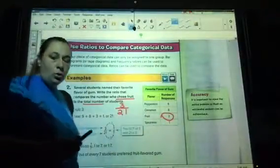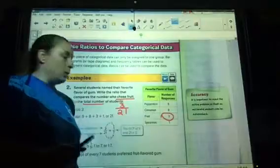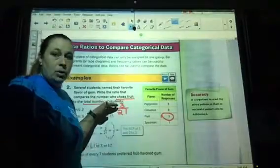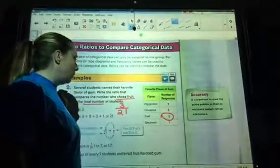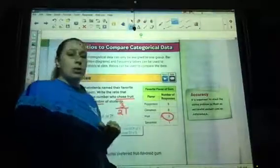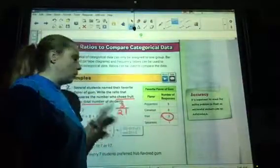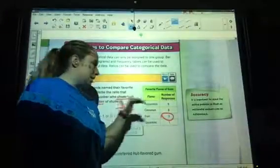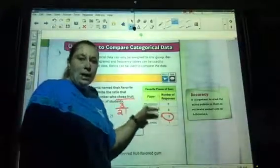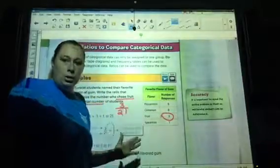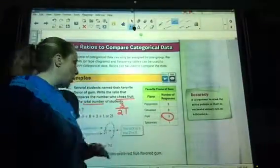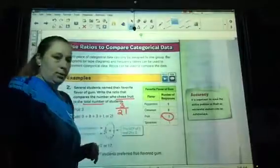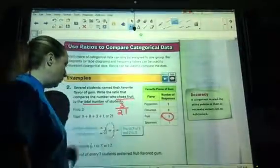Whenever you compare to a total, you include whatever they asked. So if they said the number of students that like cinnamon gum to the total, it would still be eight over 21. The number of students that like peppermint gum to the total is nine over 21. The person that even likes that gum is included in that total. So out of 21 kids, three of them like fruit flavored gum. Then we simplify.